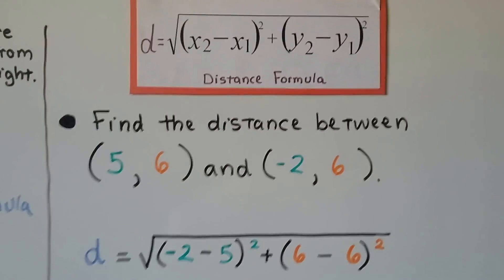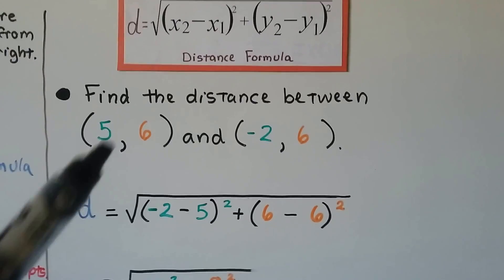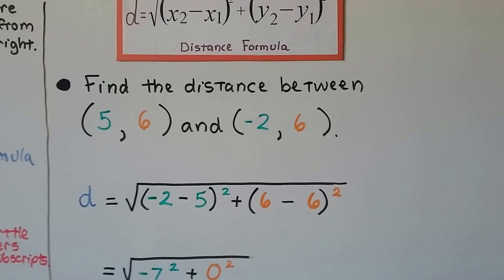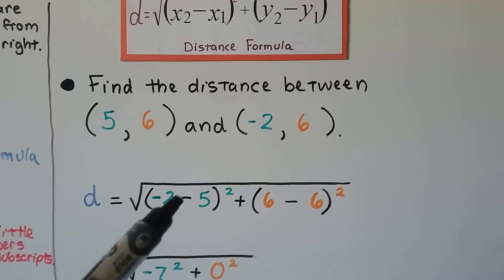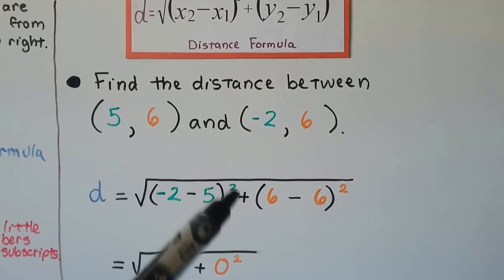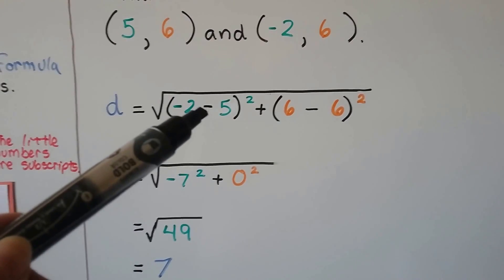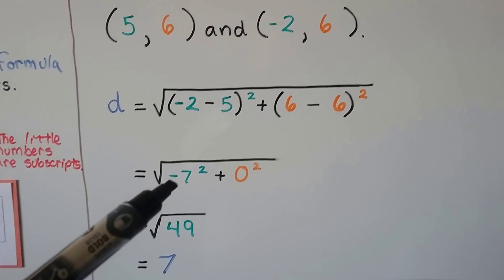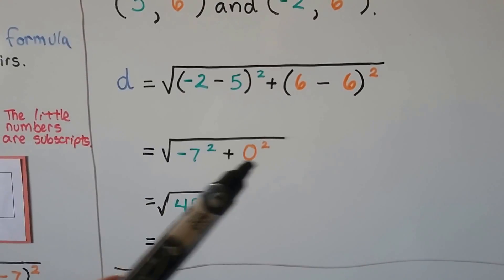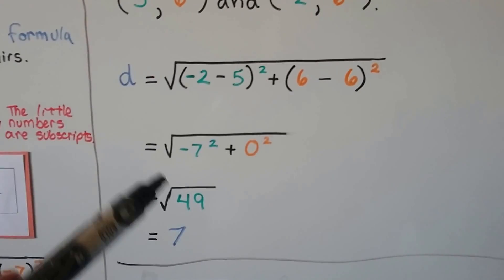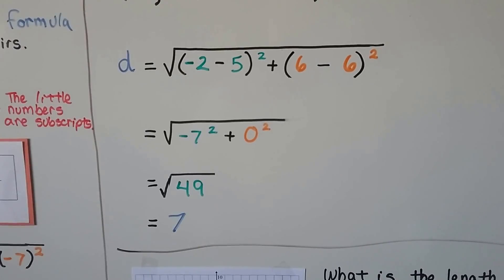Here's another example. Find the distance between (5, 6) and (-2, 6). We put them into the distance formula. We do negative 2 minus 5, squared, plus 6 minus 6, squared. Negative 2 minus 5 gives us negative 7, squared. And 6 minus 6 is 0 squared, which is 0 — so we drop that term. Negative 7 times negative 7 is positive 49. The square root of 49 is 7, so the answer is 7.